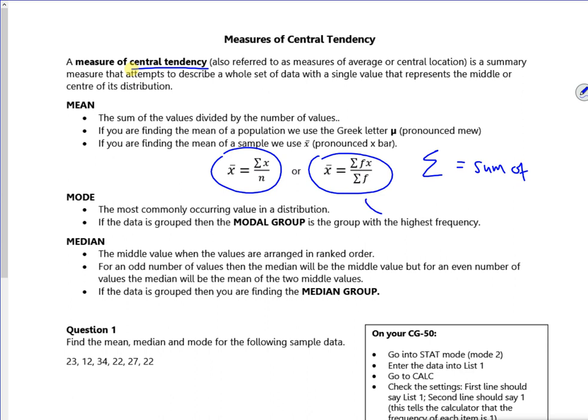This one here is for a frequency table. It says, if you're finding the mean of the population, we use mu. If you're finding the mean of the sample, we use x bar.